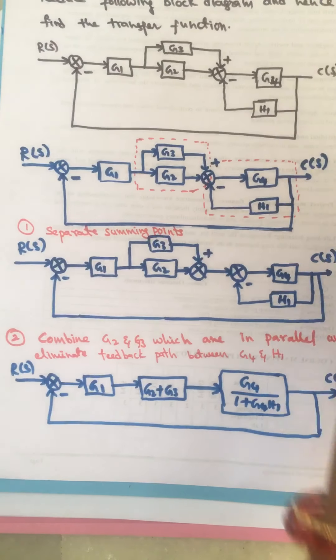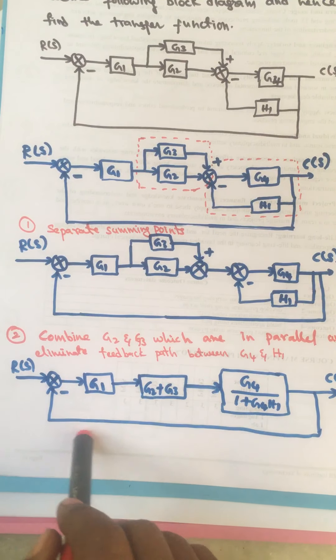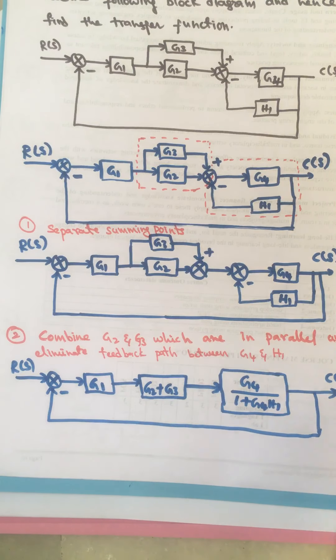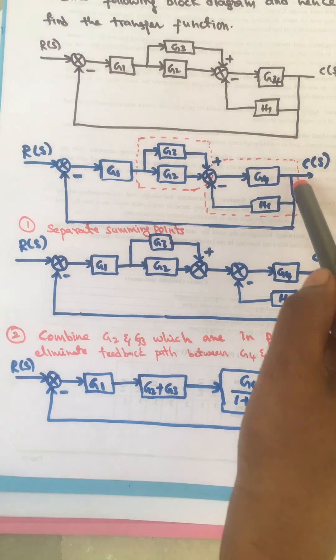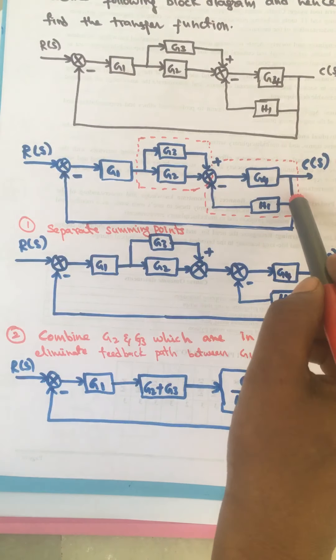Now we have this outer loop, which has a loop gain equal to 1. We include this loop as well. For this loop, the takeoff point is the same. Instead of writing these two loops combined on the same line, we have written them separately — but this will not affect anything.